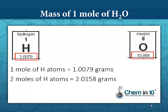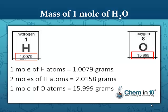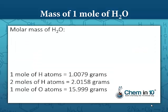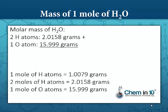Every mole of water contains approximately two grams of hydrogen, and every mole of water contains one mole of oxygen atoms, which weigh 15.999 grams per mole. The molar mass of H₂O altogether, then, is two hydrogen atoms with a molar mass of 2.0158 grams, plus one oxygen atom at 15.999 grams. We add those together and get a molar mass of 18.0148 grams.